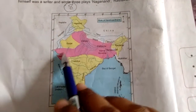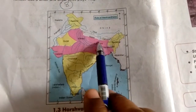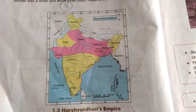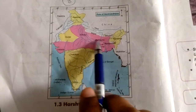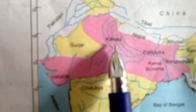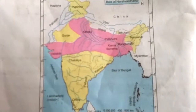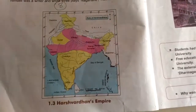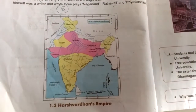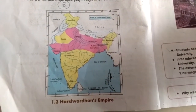You can see the map here — the pink part shows the empire of King Harshvardhan. We will continue with this lesson in the next session. Thank you.